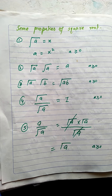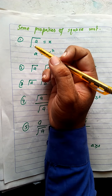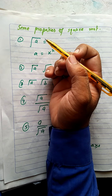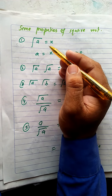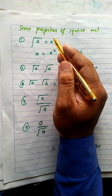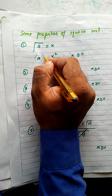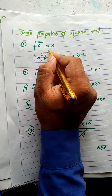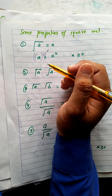Now students, there are some properties of square root. The first property is that if we square both sides, under root is equal to one upon two as a power, and squaring means multiplying the power by two, so they cancel. That is the first property of square root.